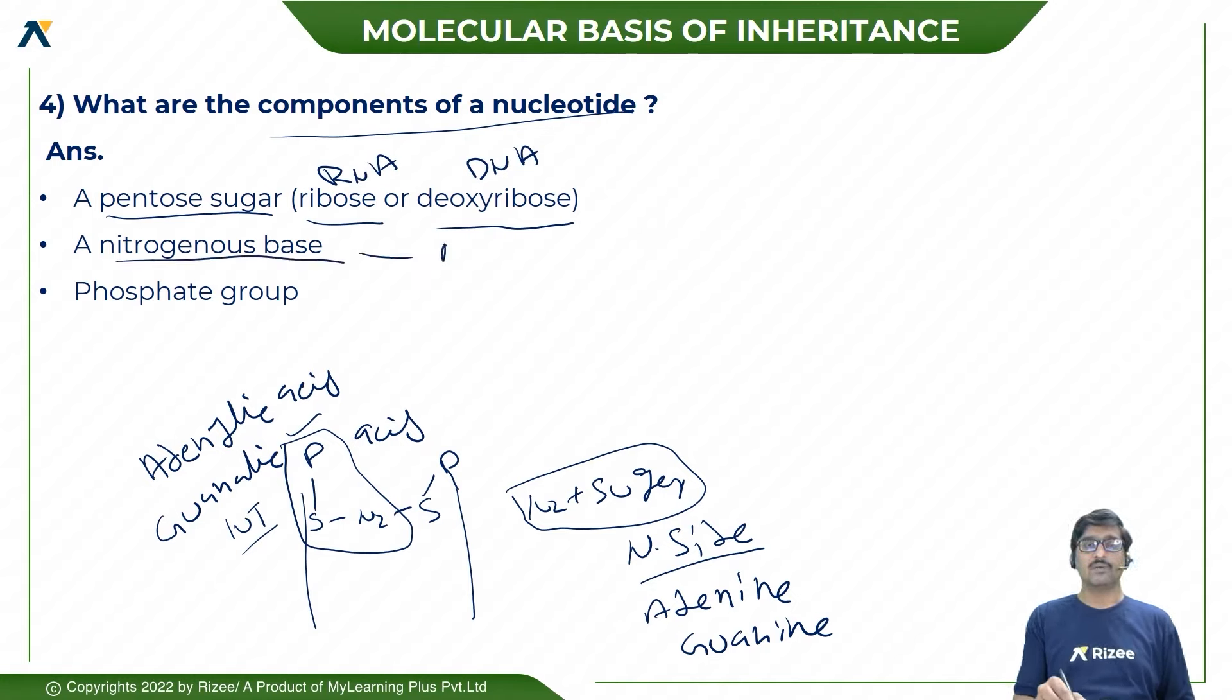Nitrogen bases are known as adenine, thymine, guanine, cytosine, and uracil.